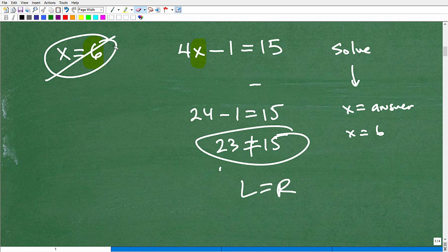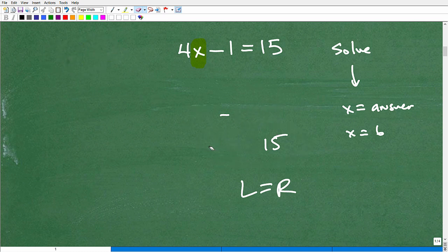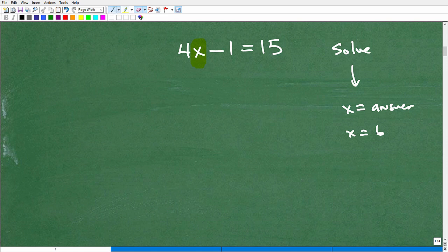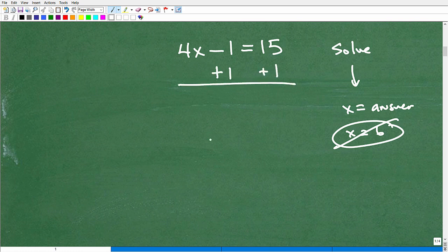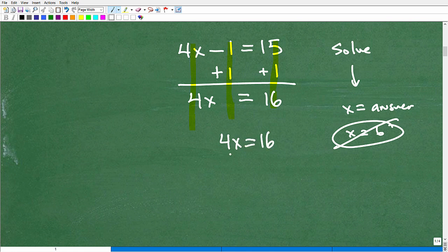But let's go ahead and quickly solve this here. We know x equals 6 is not the answer. It's not the solution. But what is the solution? Well, if you're interested, we can go ahead and solve this equation. The first thing here is I'm going to add 1 to both sides of the equation. Then I'm going to add down in a column manner. And I get 4x, negative 1 plus 1 is 0. That's equal to 16. So, I have 4x is equal to 16. And then, finally, to get x by itself, I need to divide both sides of the equation by 4. And I get x is equal to 4.